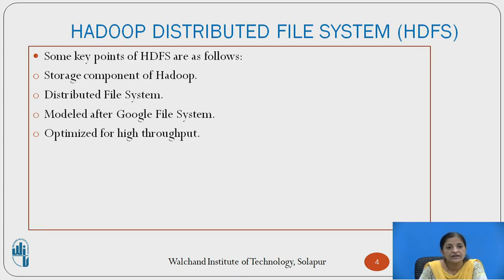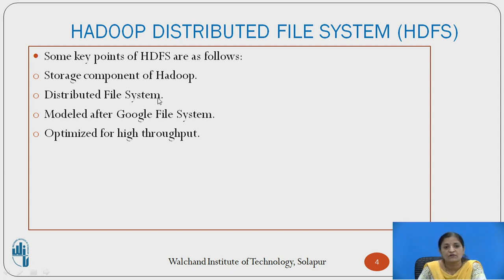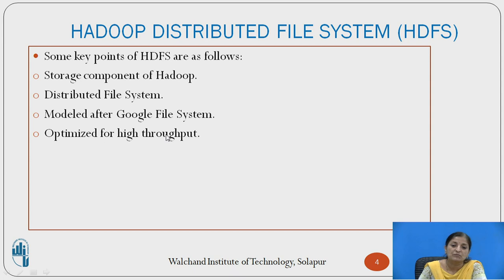Now let us start with the key points of Hadoop Distributed File System, that is HDFS. First of all, it is a storage component of Hadoop, so it uses a distributed storage concept. Second, it is a distributed file system modeled after the Google File System and it is optimized for high throughput — designed so that maximum throughput is achieved, meaning the maximum number of user requests are satisfied or user tasks are executed.